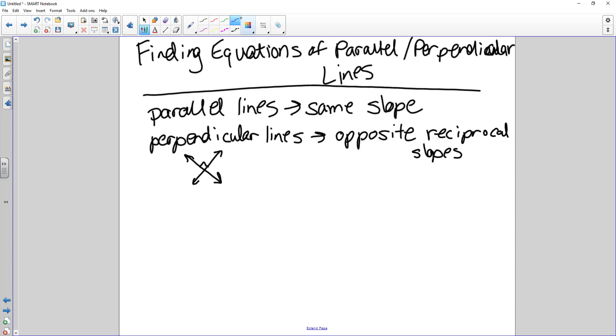So an example of this, before we do a full example, if the first slope is one half, then the second slope of the perpendicular line would be negative two. Or if I have slope one is negative five thirds, then the perpendicular line would have a slope of positive three fifths.